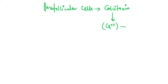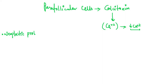Calcitonin promotes the excretion of calcium through the renal system, which decreases the levels of total calcium and therefore plays a very important role in normalizing calcium levels when they get elevated. In the case of parafollicular cell tumor or medullary carcinoma of the thyroid, there occurs neoplastic proliferation of these parafollicular cells.